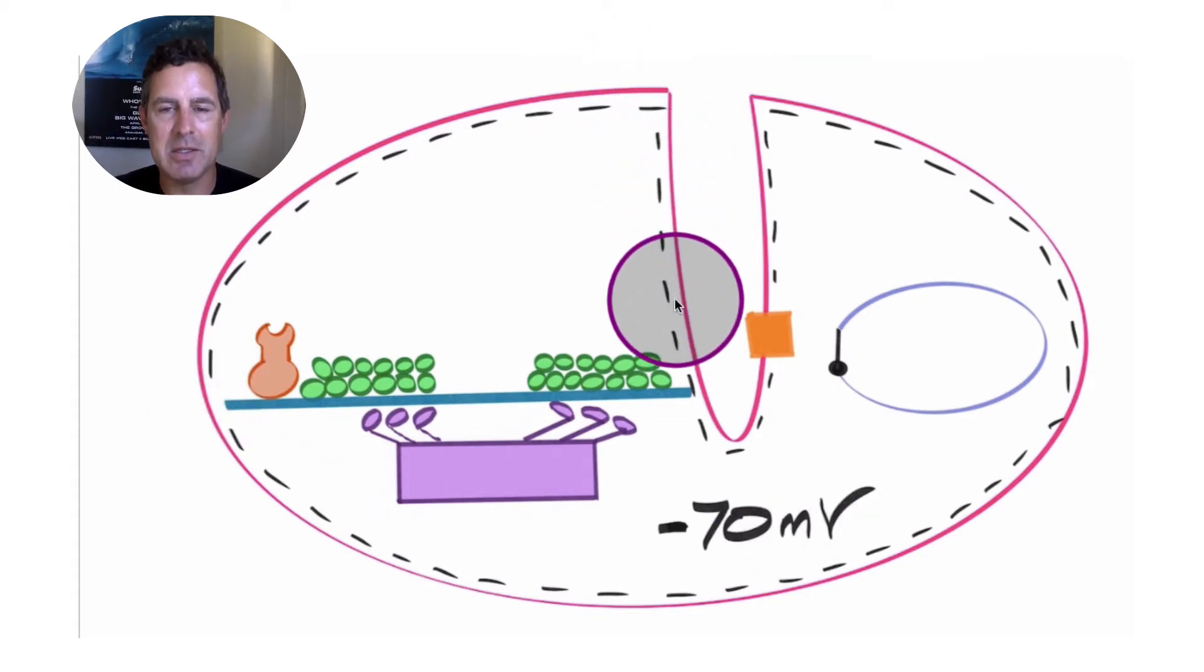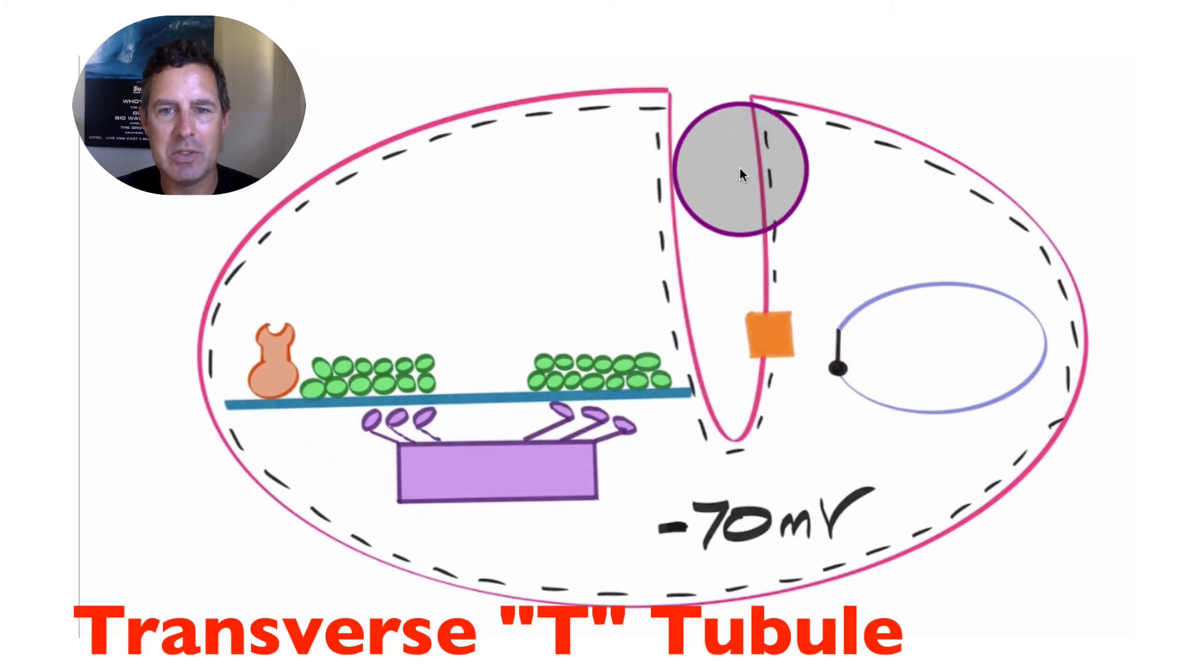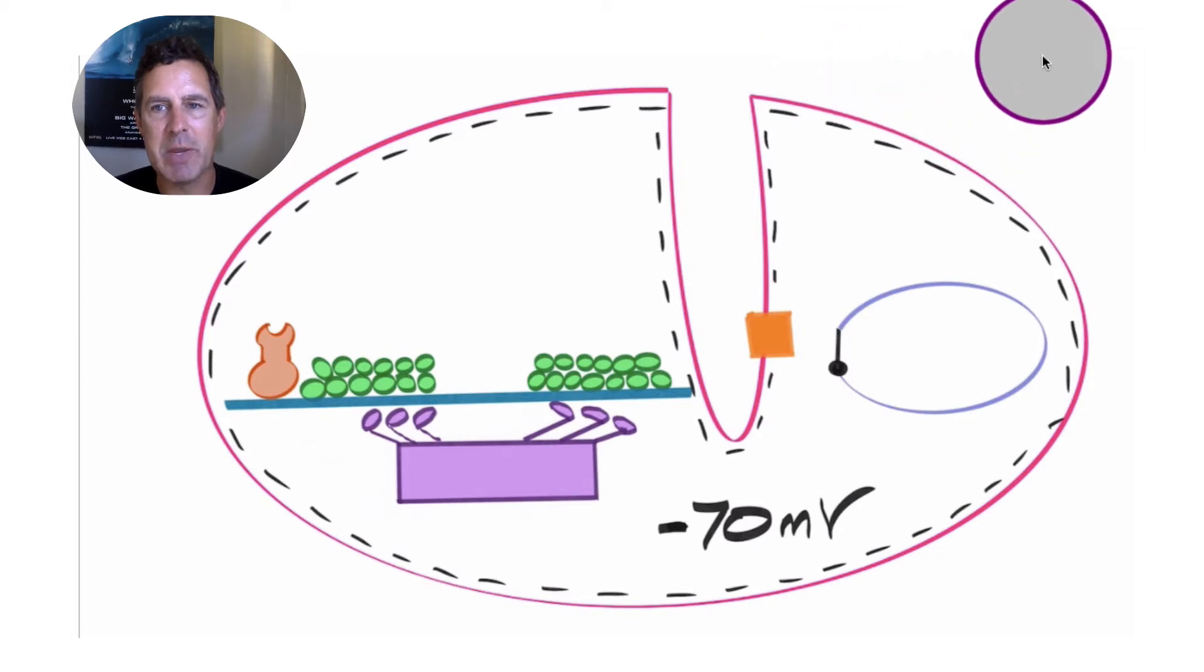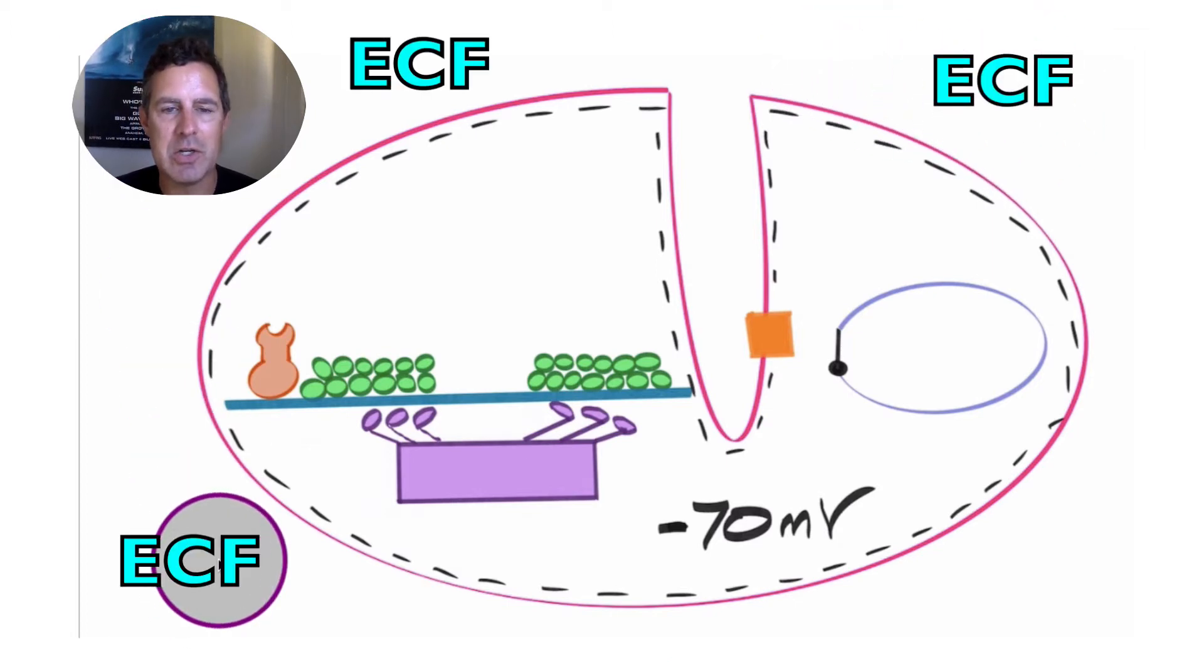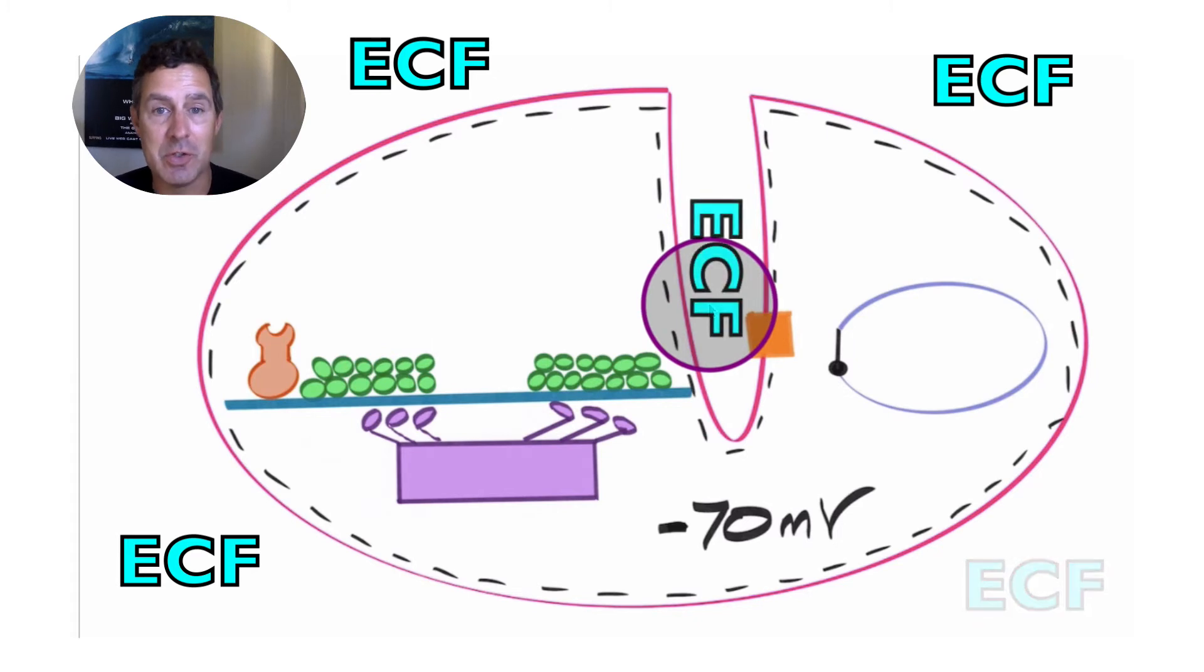The sarcolemma dips into the interior of the cell, and this structure right here is known as the T-tubule. So, the dipping of the sarcolemma towards the interior of the cytoplasm is known as the T-tubule. For clarity, this space right here and right here is the extracellular fluid. Dipping into the T-tubule, this is also the extracellular fluid.